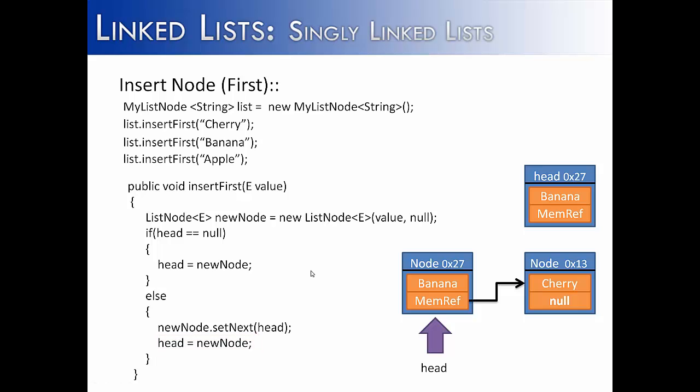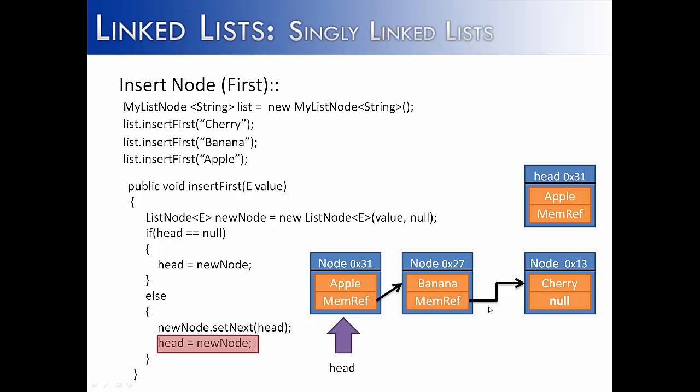We're going to do it one more time, and we're going to insert apple at the front of the list. It follows the same steps. We pass apple as the value, and its next reference is going to be null. Head is not null, it's pointing to a node. So we're going to go to the else statement. And then we say new node, which is the node that we created, is now set to the old head. And now that we've done that, we can take the head and make apple the new head or node 31, and it will be the front of our list.